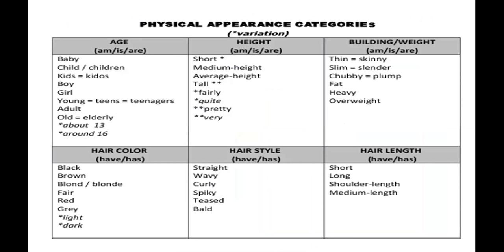When you talk about age, you use am, is, or are. Remember to always use the verb 'to be.' For example: the baby is 9 months old, the child is 4 years old, the boy is 12 years old, the girl is 15 years old. To talk about young people we can say teens or teenagers. Old and elderly are synonyms; young and teen or teenager are synonyms. Teens are those between 13 and 19.